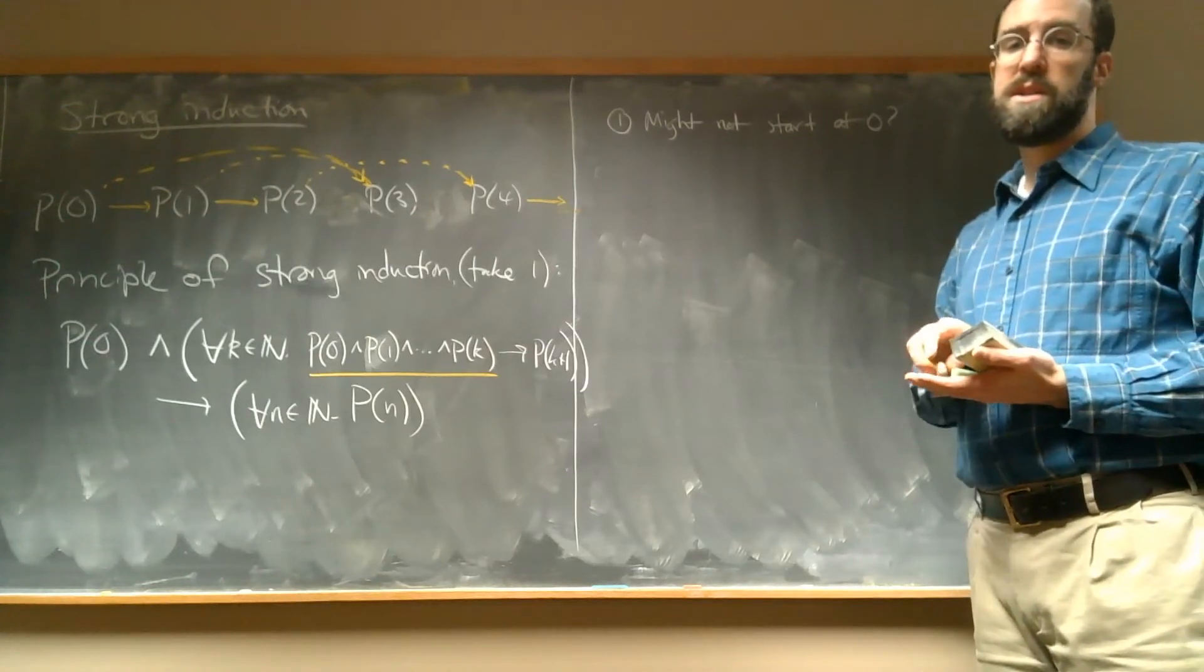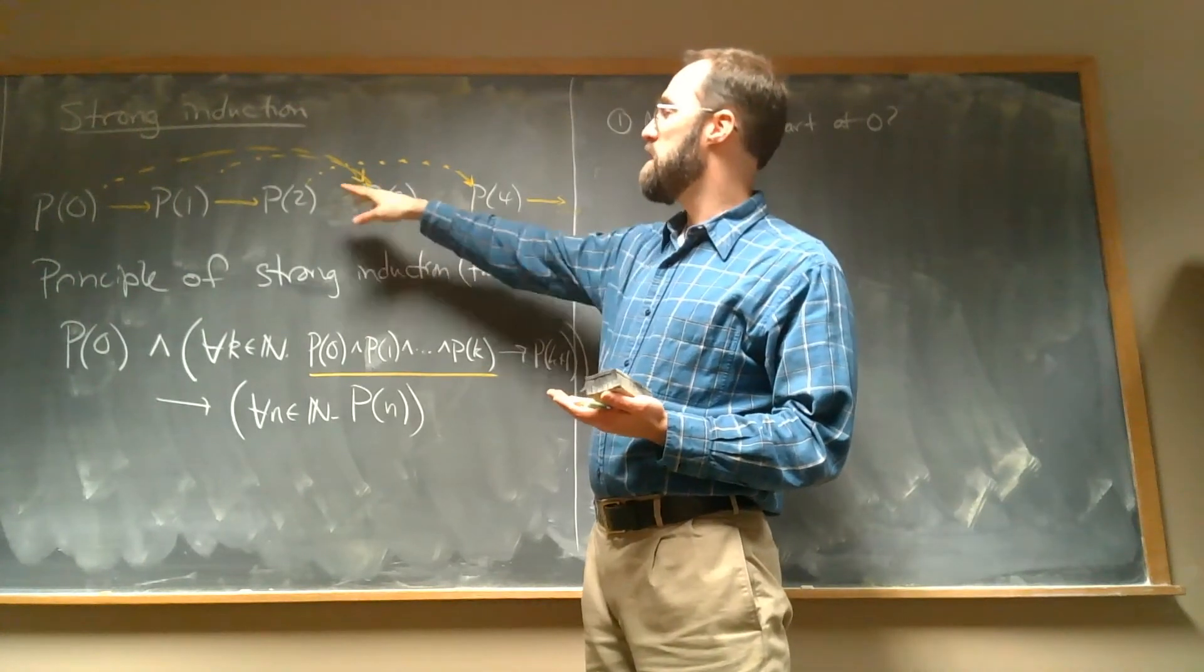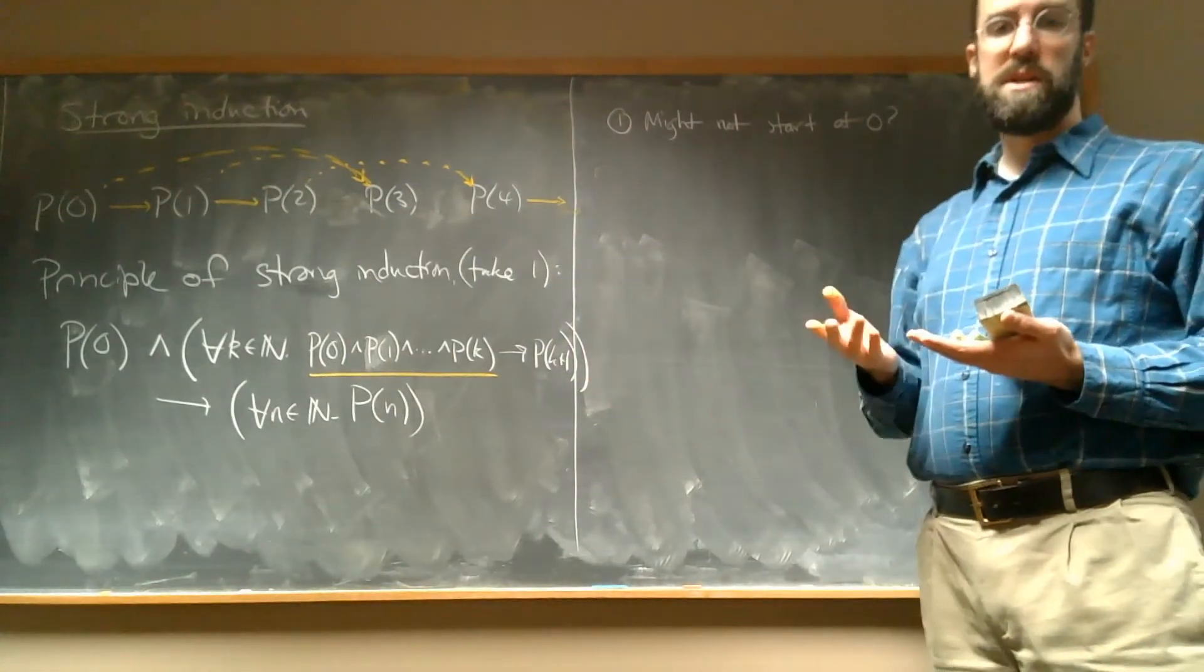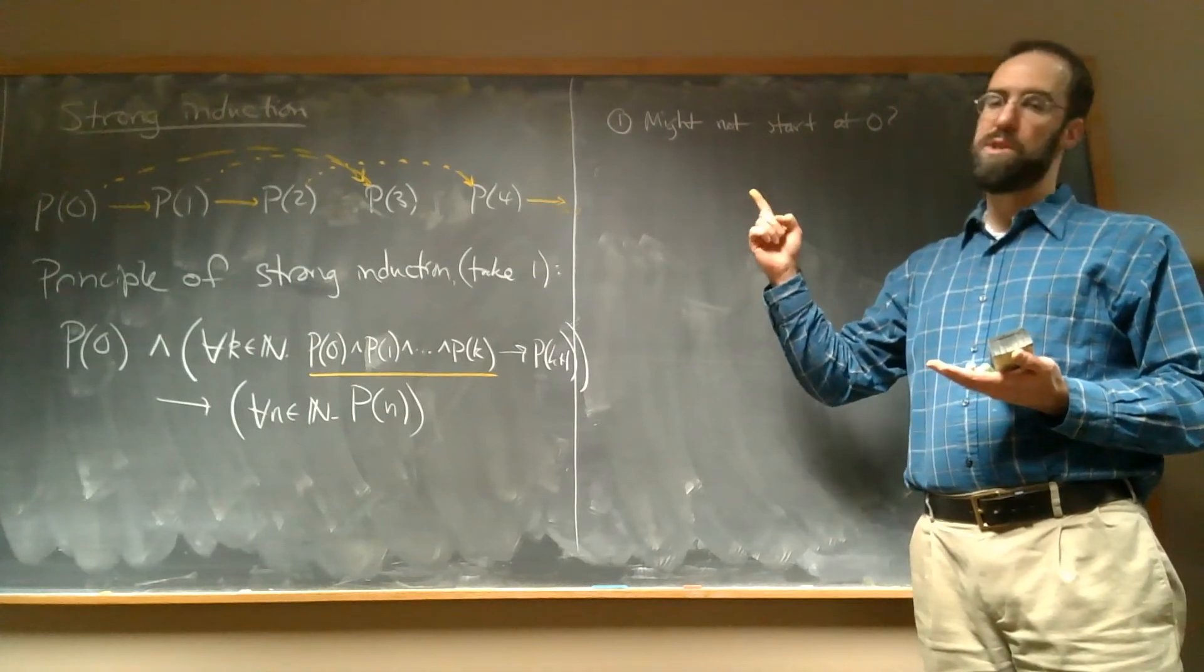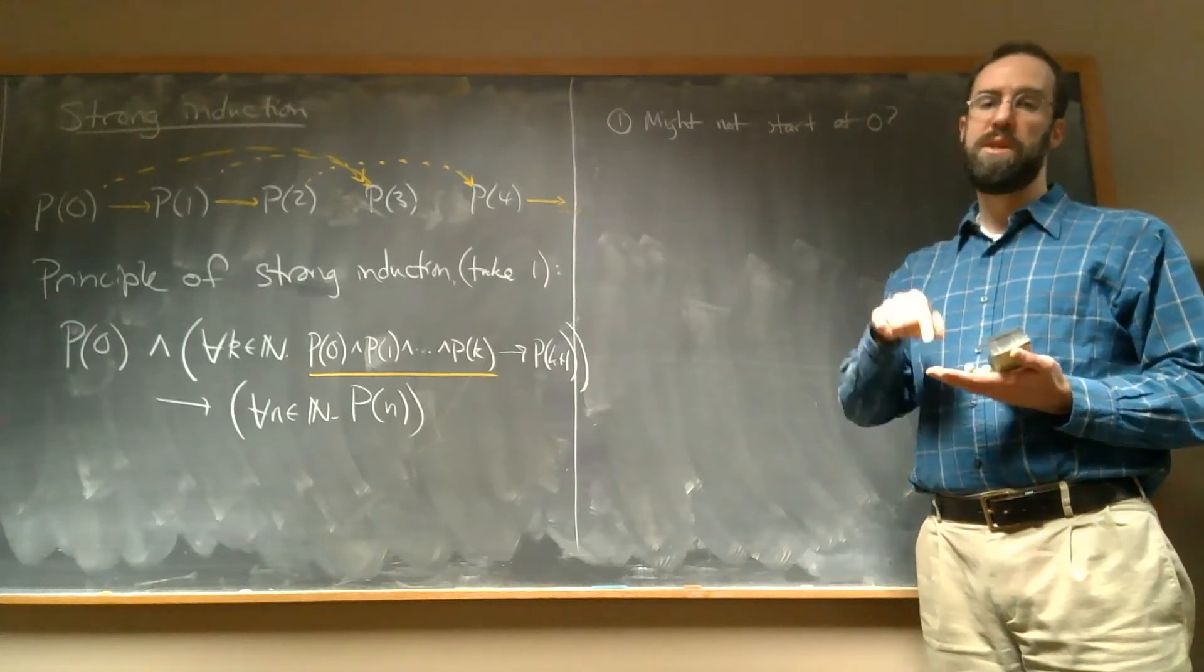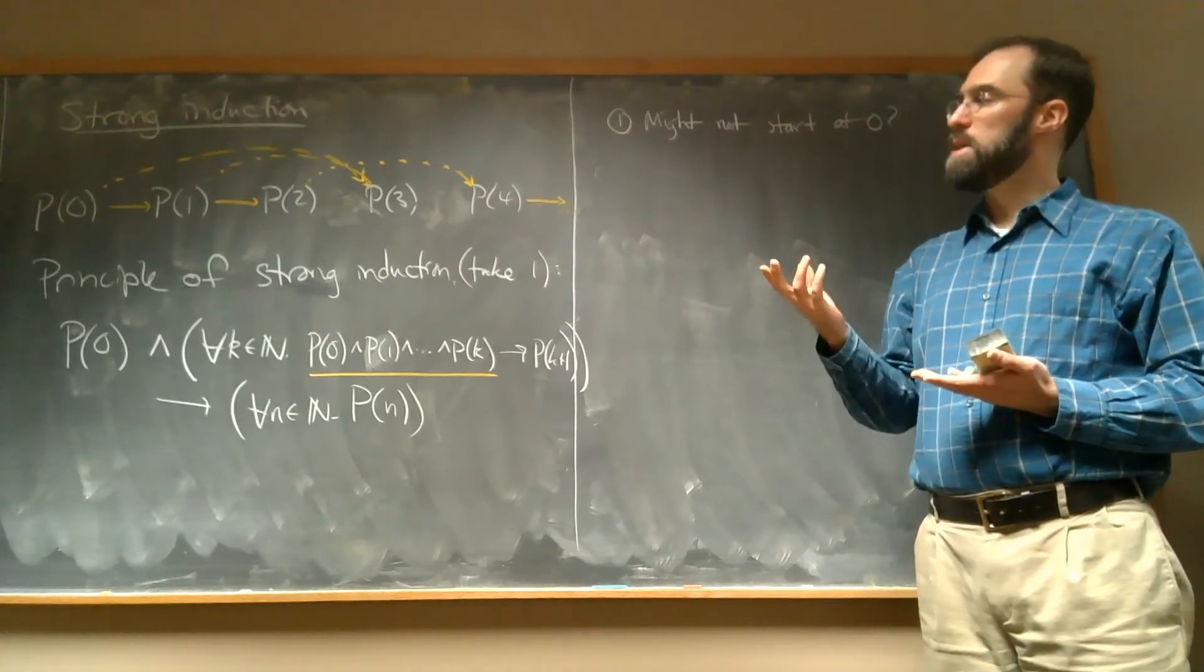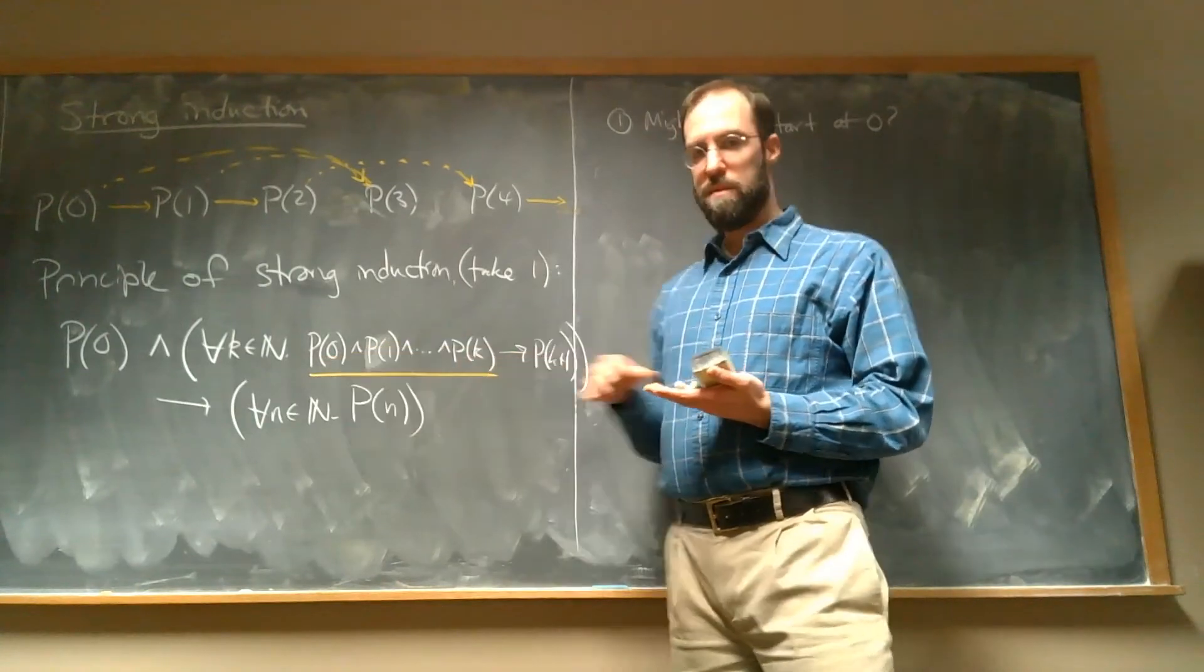The other thing that happens here is that sometimes, like in this example in my fake scenario where P(3), we actually needed to know P(0) and P(1), sometimes you need more than one base case because each proposition might need multiple previous propositions in order to prove it. We'll see an example of that in a subsequent video. But we may need to have multiple base cases.